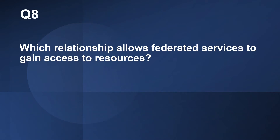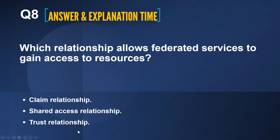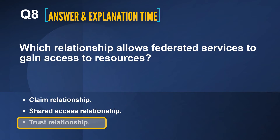Question number eight: Which relationship allows federated services to gain access to resources? The options are: claimed relationship, shared access relationship, or trust relationship. The correct answer is trust relationship. Federated services use a trust relationship to allow access to resources.